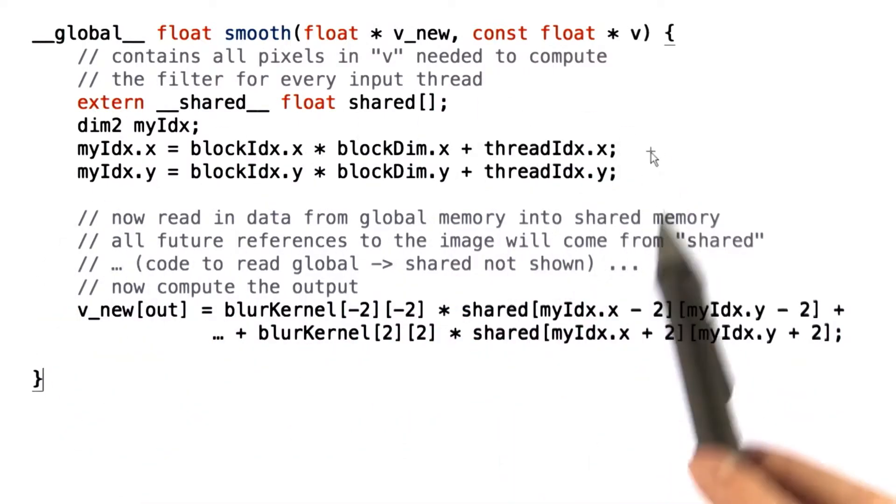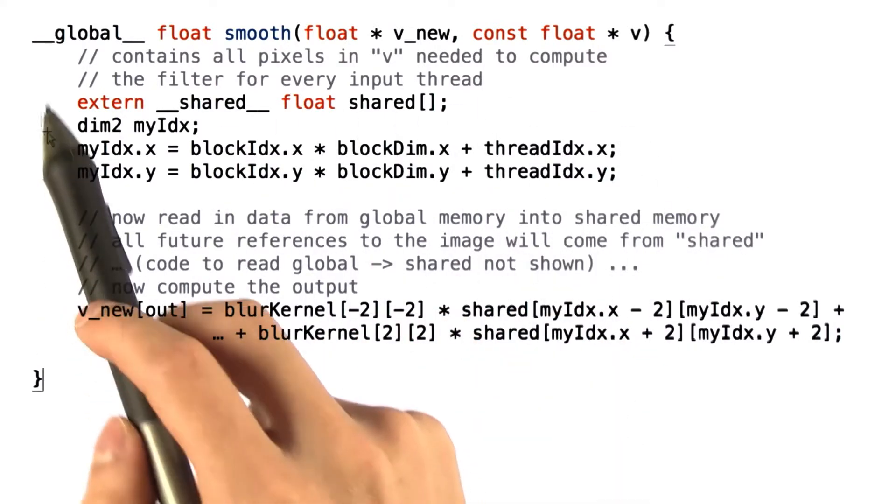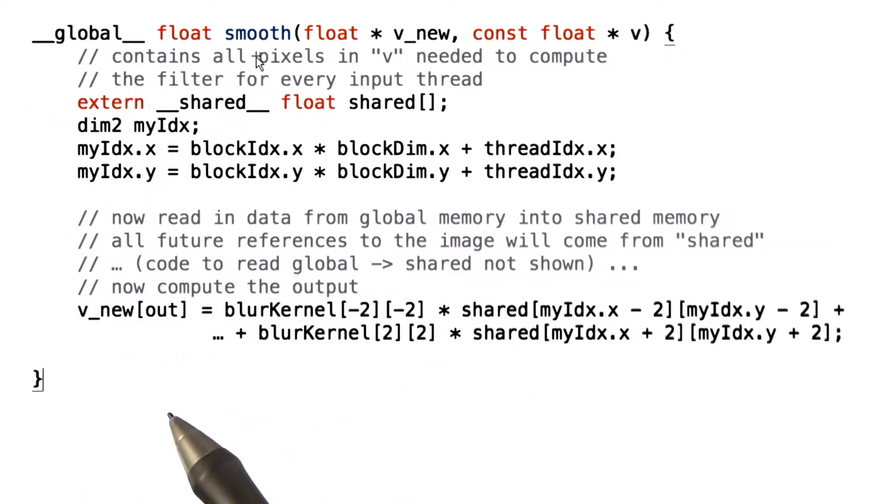Our code will look something like this. You can choose how to launch this kernel in terms of threads per block configuration. You have two choices, 1024 by 1 or 32 by 32. Both choices will feature 1024 threads per block.